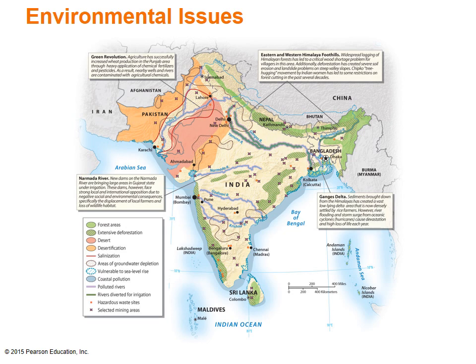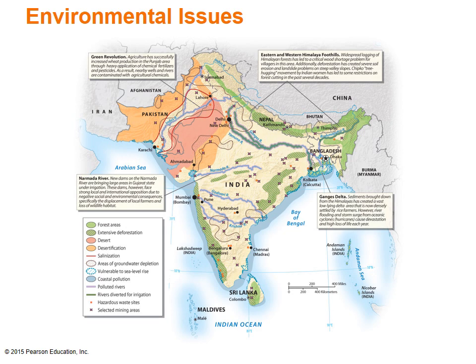As might be expected in a highly diverse and densely populated region, South Asia suffers from major environmental problems. These range from salinization of irrigated lands in the dry areas of Pakistan and western India, to groundwater pollution from Green Revolution fertilizers and pesticides. Deforestation and erosion are widespread in upland areas. The link between population pressure and environmental problems is nowhere clearer than in the Delta area of Bangladesh, where the search for fertile land has driven people to hazardous areas, placing them in serious risk from flooding and cyclones.